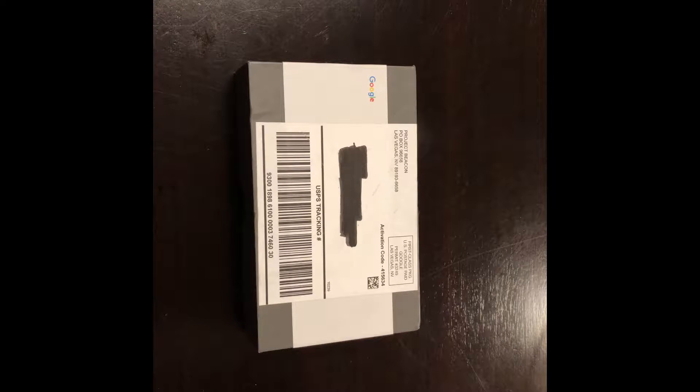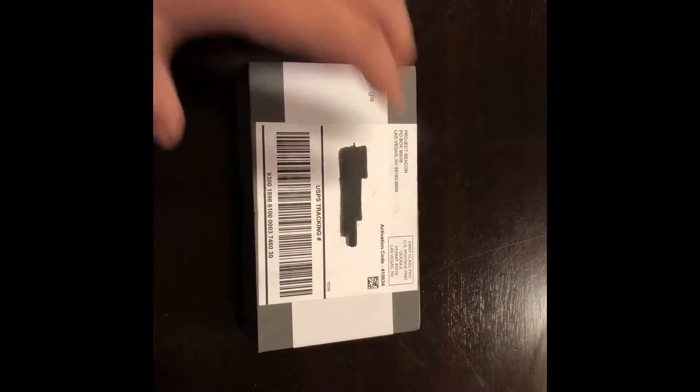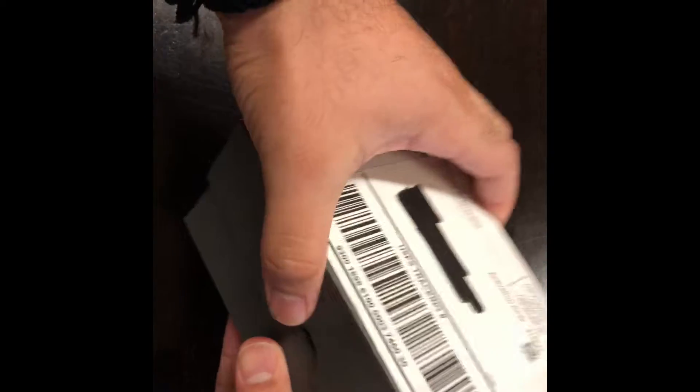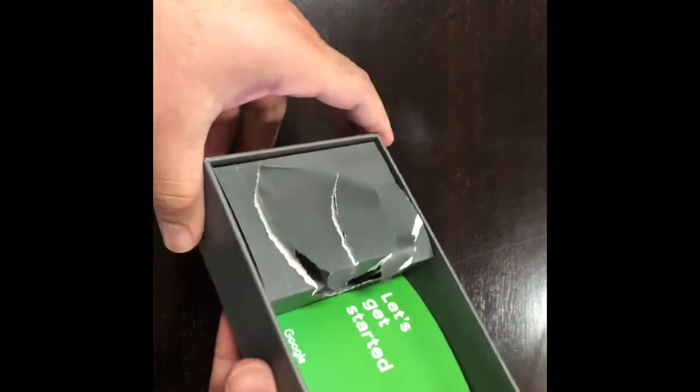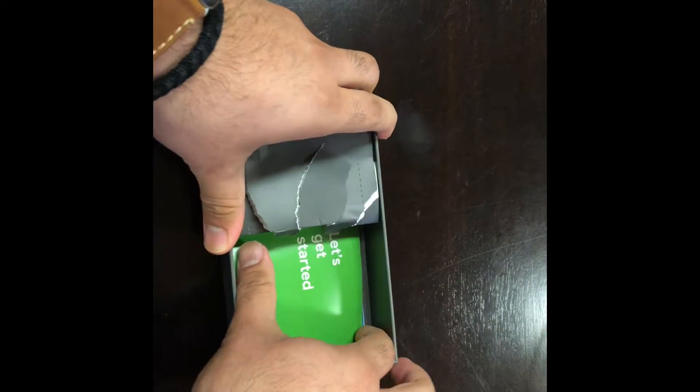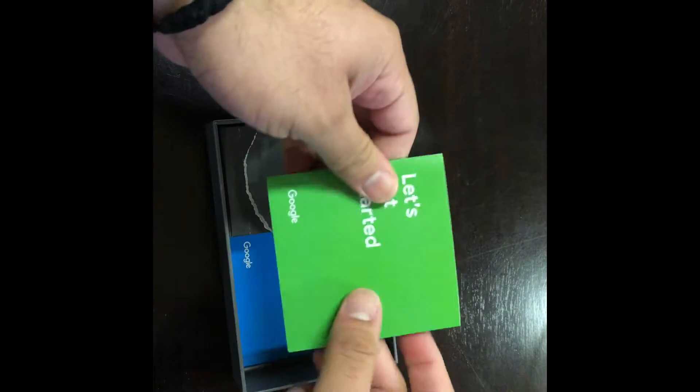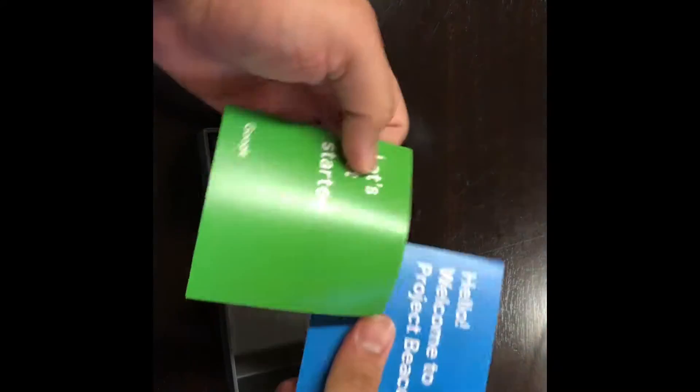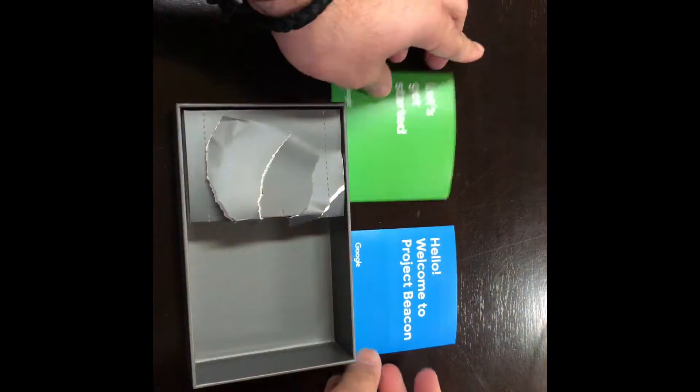Let's go ahead and open the box. Inside you'll see two different booklets. One is the Getting Started guide, and the blue booklet shows you the benefits of having the beacon.